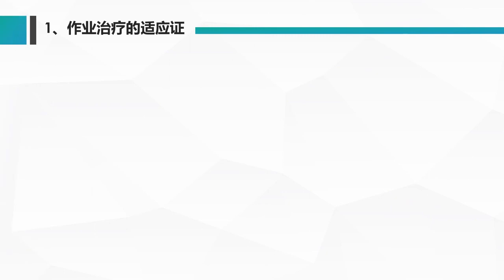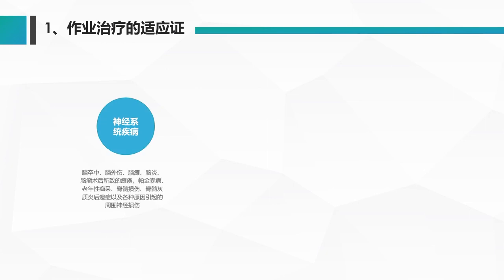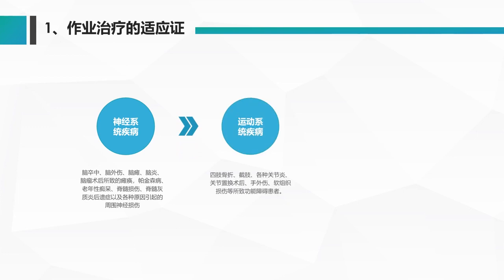适应症主要包括以下范围：神经系统疾病，如脑卒中、脑外伤、脑瘫、脑炎、脑瘤手术后造成的瘫痪、帕金森综合症、脊髓炎、脊髓灰质炎、各种原因造成的周围神经损伤；运动系统疾病，包括四肢骨折、截肢、各种关节炎、关节疾患、手外伤、软组织损伤等所造成的功能障碍患者。